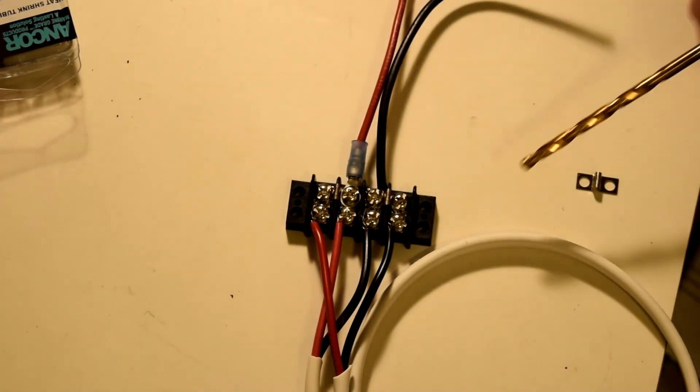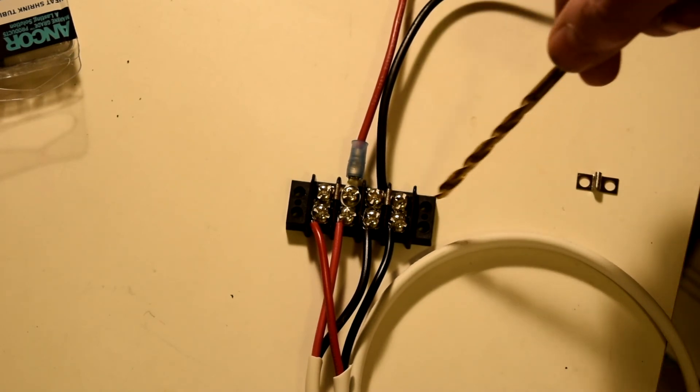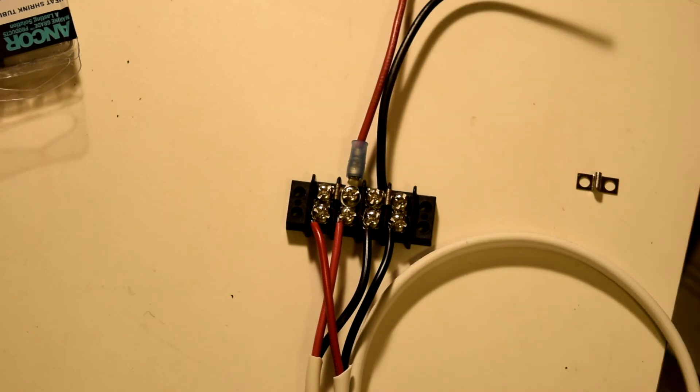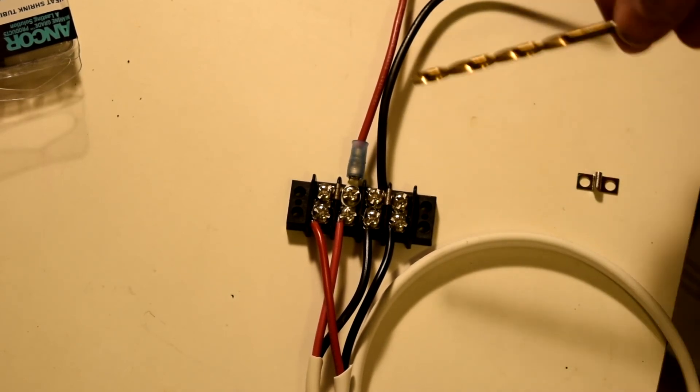You can buy barrier terminal strips in a variety of different sizes and this one happens to be a four conductor one. You can get them up to 20 or so. They also come with different size terminals. This is one I just happened to have.